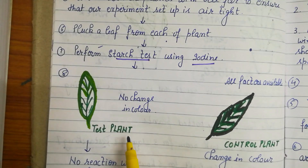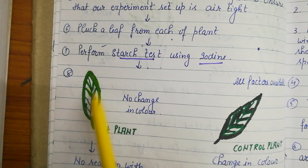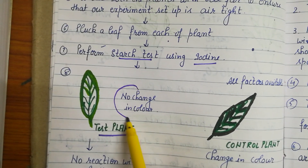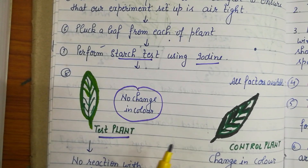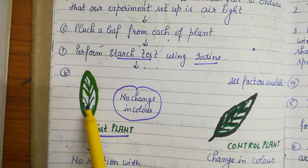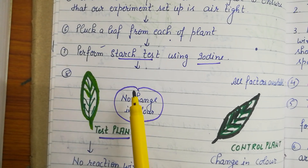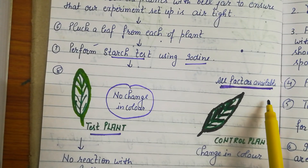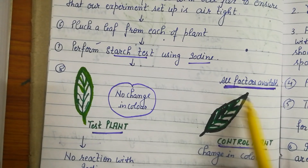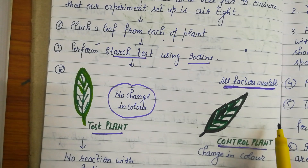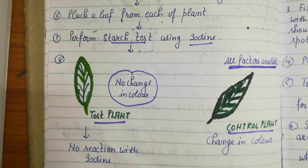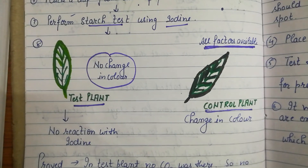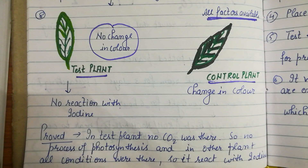After performing the starch test, it is noticed that in the test plant there was no change in color. If starch were present, it should turn blue-black, but no change was observed. In the control plant, where all factors including CO2 were provided, the plant changed color and turned into a blue-black complex, reacting with iodine.